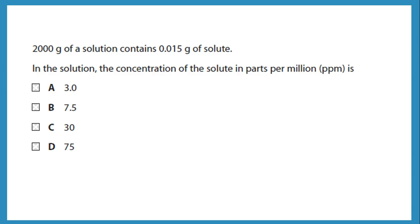200 grams of a solution contains 0.015 grams of solute. The concentration of solute in parts per million is 0.015 over 200 times 10 to the 6, which gives 75 parts per million.